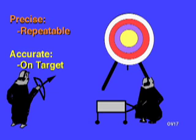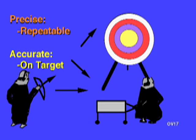A precise, repeatable response is essential. Accuracy — or how close the response is to the true value — is important, but not essential. Here's the difference between accuracy and precision. To illustrate, let's go to an archery match in Sherwood Forest. Our first shooter is Friar Tuck. His arrows are all over the place, never hitting the target. He has neither accuracy nor precision.